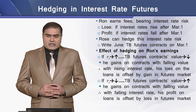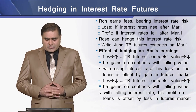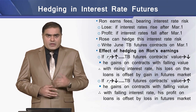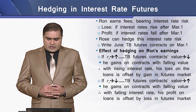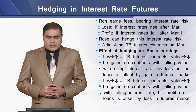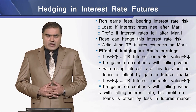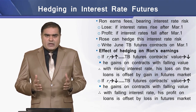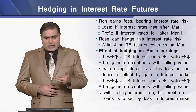Although Ron is earning certain fees for bearing the interest rate risk, there is still a potential loss or unknown gain for him. If the interest rate rises after May 1, he will be the loser, and if the interest rate falls after May 1, he will be the gainer. Ron can hedge this interest rate position by writing Treasury Bond futures contracts on March 1. If Ron writes these futures contracts, what will be the effect of this hedging on Ron's earnings?